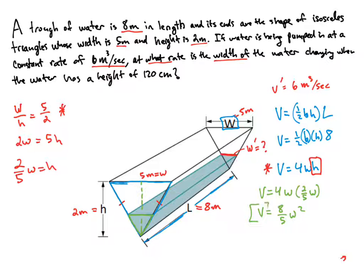And now let's differentiate with respect to T. And I'm going to get V prime is equal to, well, that's 16 over 5 W times W prime. So we have V prime that was given to us up here. That's 6 is equal to 16 over 5.